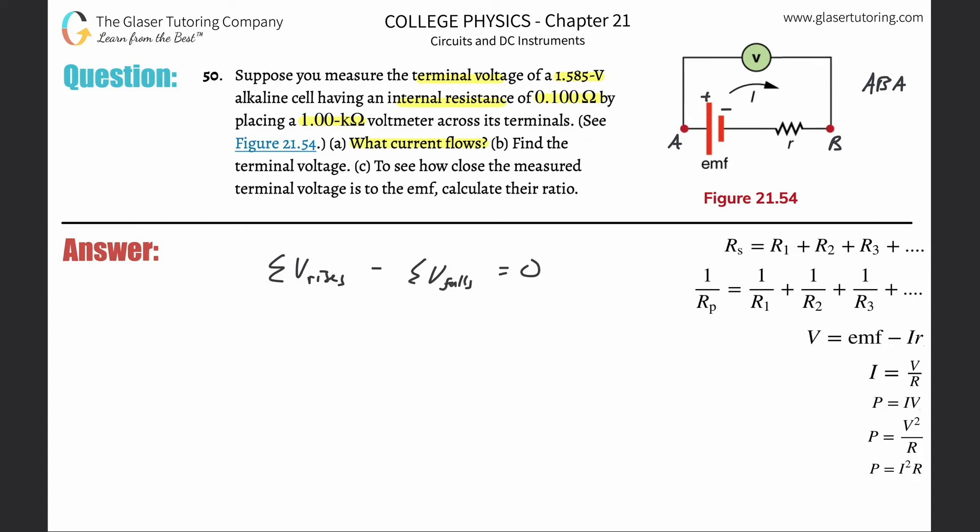will equal zero. That's loop rule. As we travel around the circuit, we hit a voltmeter. Inside that voltmeter there is a resistance of one kilo-ohm, 1 × 10³ ohms. The current flowing through the circuit is going to be simply I₁ or just I—it doesn't really matter what you call it. The current here